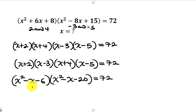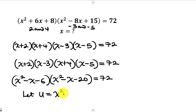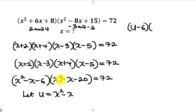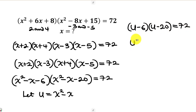Notice that x² − x appears in both factors. So I'll introduce a substitution: let u = x² − x. Rewriting, the expression becomes (u − 6)(u − 20) = 72. Expanding: u times u gives u squared.